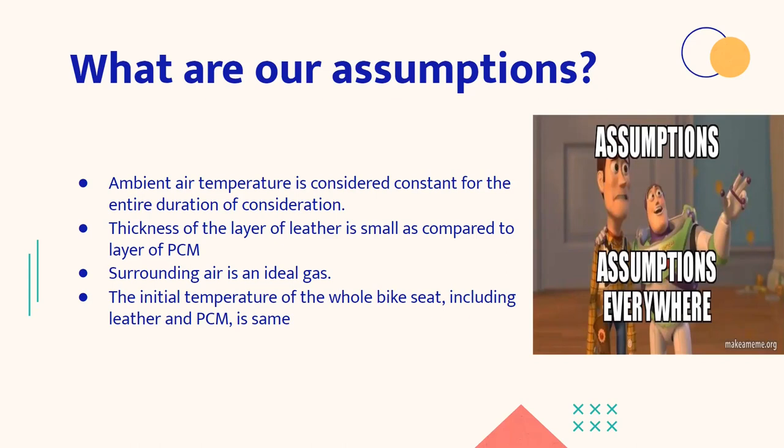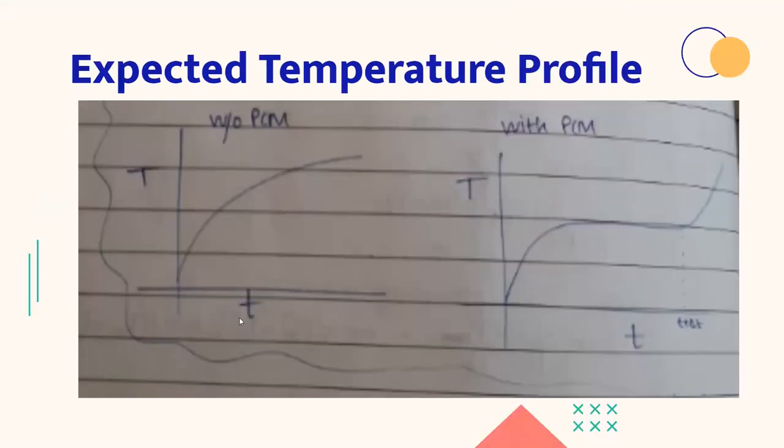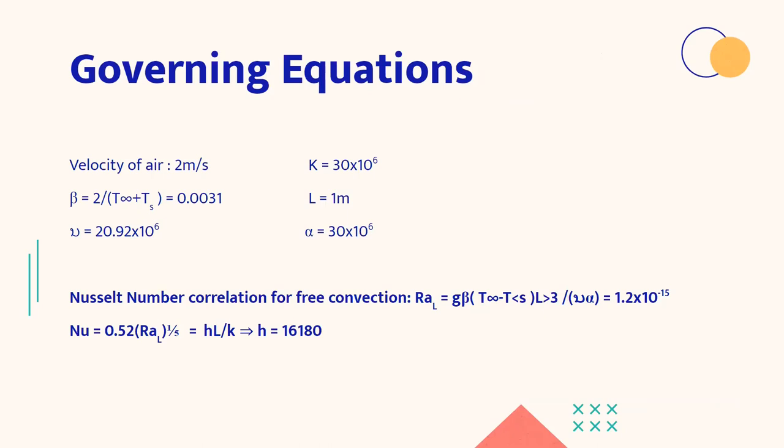Here is our expected temperature profile. Firstly, we see that if we don't use PCM, the temperature increases always. And if we use PCM we can see that the temperature becomes constant or the rate of temperature rise decreases for the time the PCM starts melting. Before the PCM starts melting the temperature rises, and after the PCM is fully melted then also the rate of temperature rise is good enough.